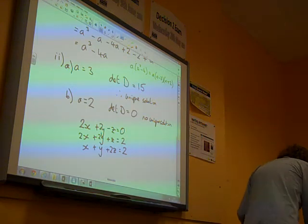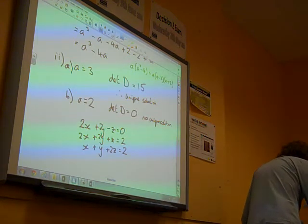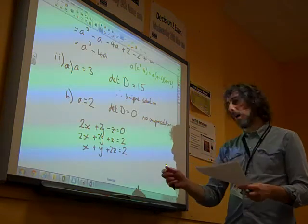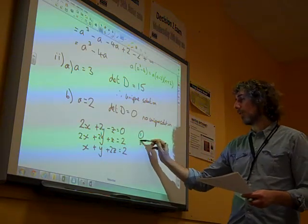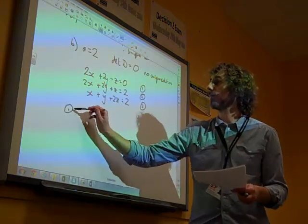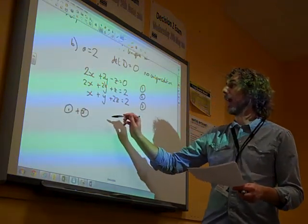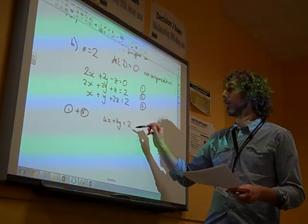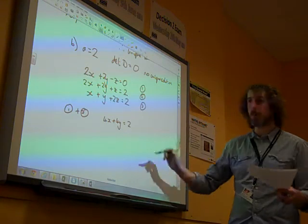And I can't remember exactly, there's lots of ways that you can go about doing this now. What did I do? At this point, I said, I called these equations 1, 2 and 3 and said, the thing that I spotted was if you add 1 and 2, you get 4x plus 4y equals 2, which means that x plus y is a half.